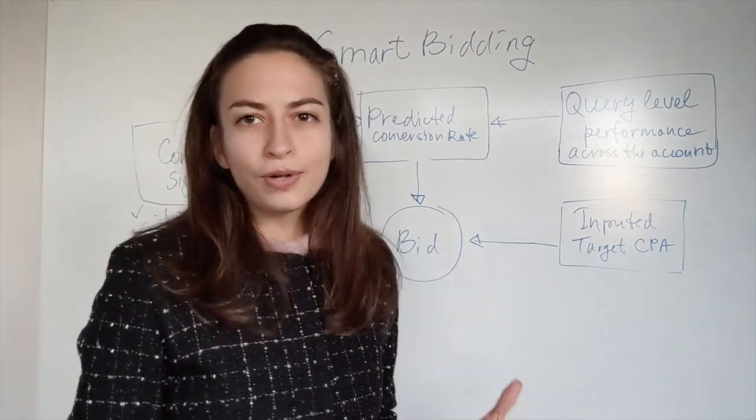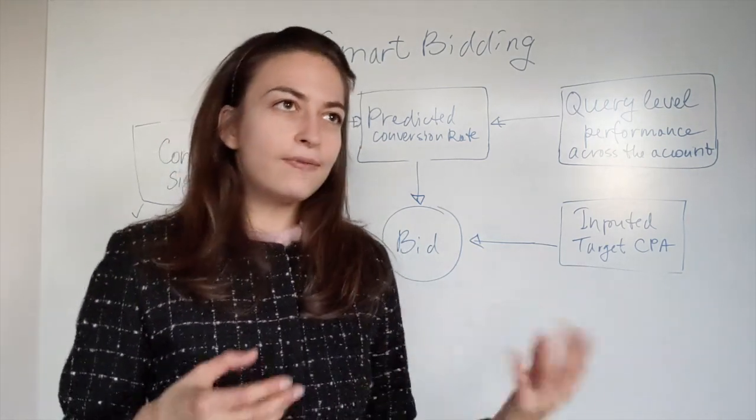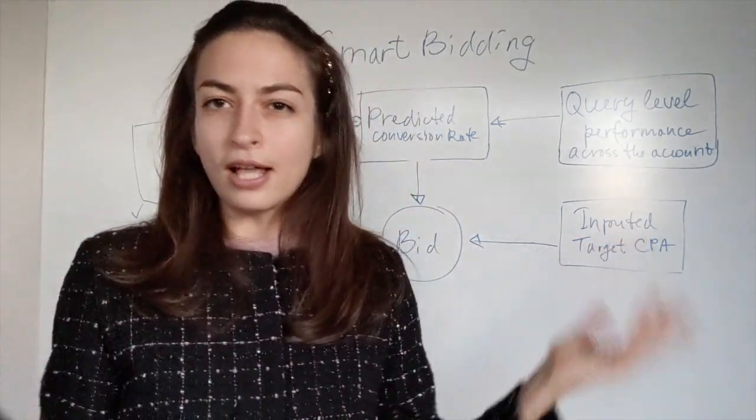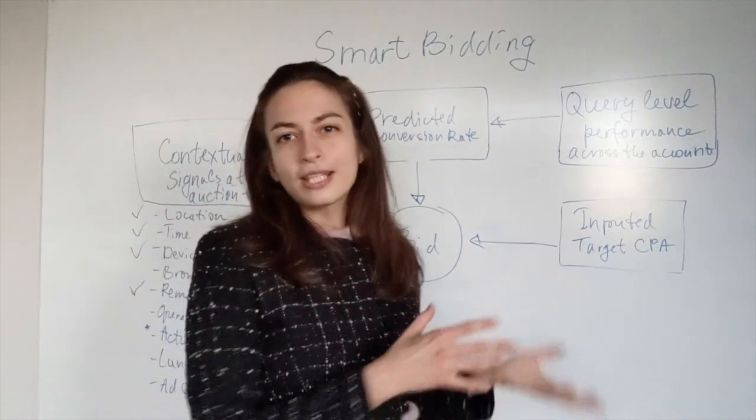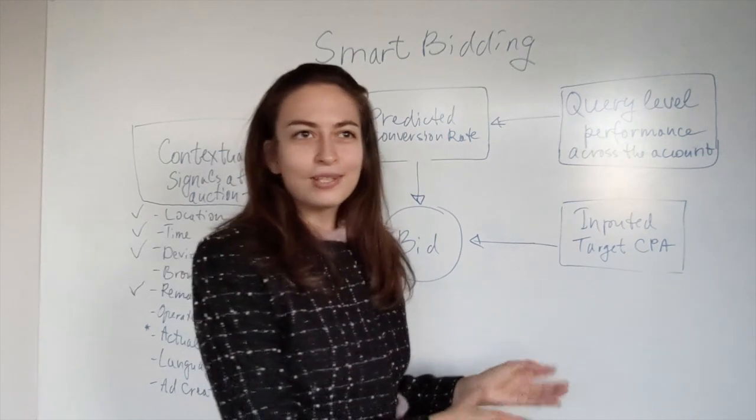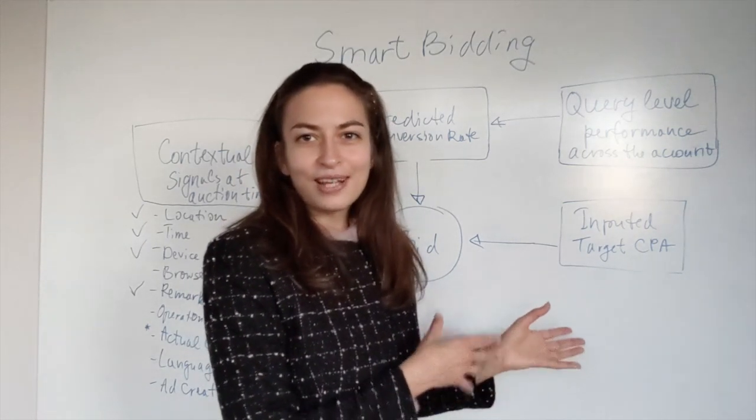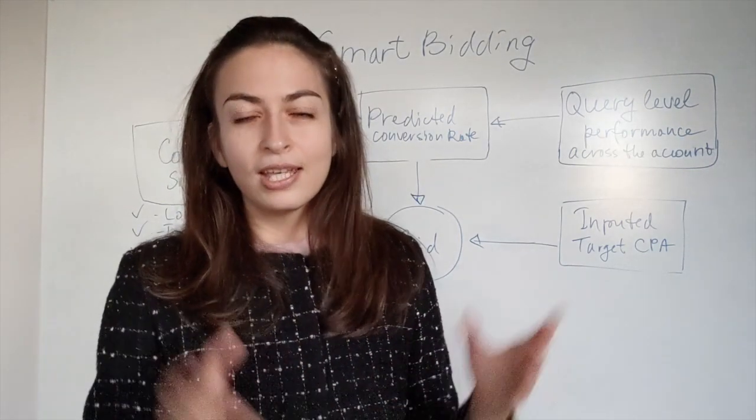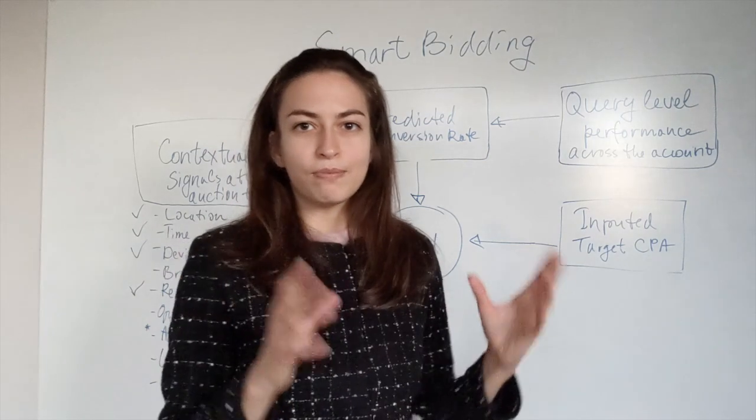Another very important thing is make sure that your inputted CPA is realistic. Don't try to be too aggressive from the beginning. Let's say if you run campaigns manually and your typical CPA has been 100 pounds, you cannot expect putting a smart bidding solution and setting up target CPA at 20 pounds to give you the right volume of conversions.